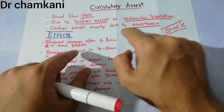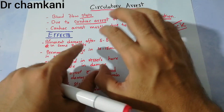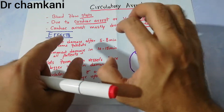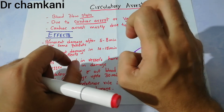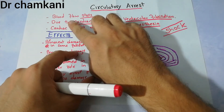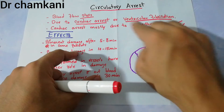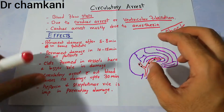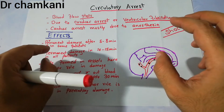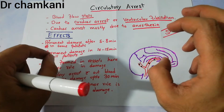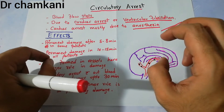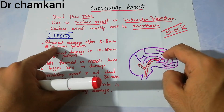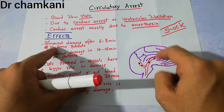In absolutely normal patients who are being operated, anesthetics can lead to circulatory arrest in which the blood basically stops flowing. The effects of circulatory arrest include permanent damage to the brain.